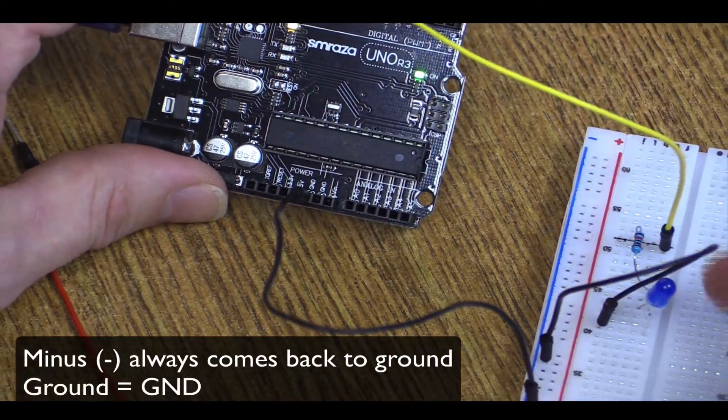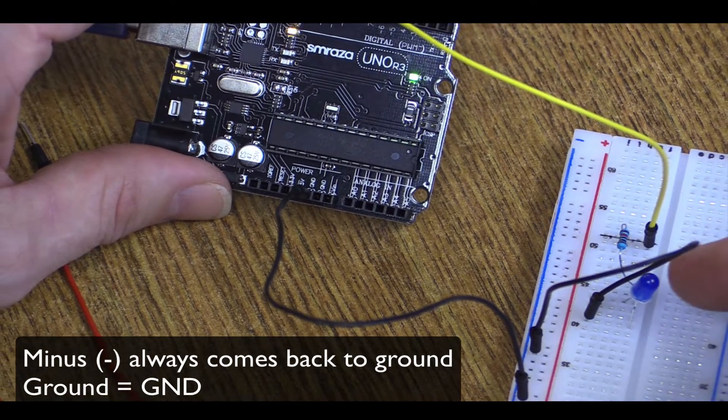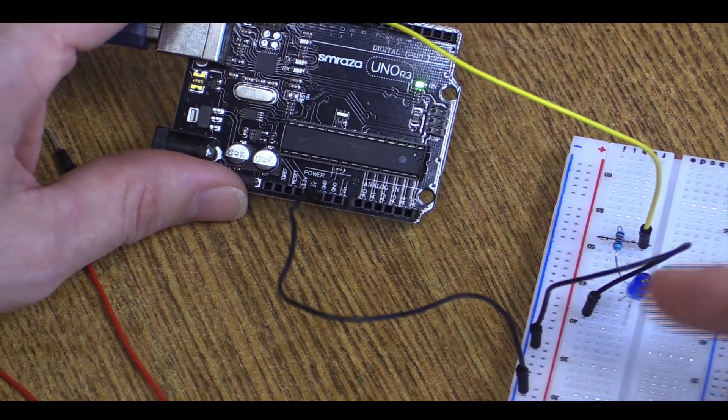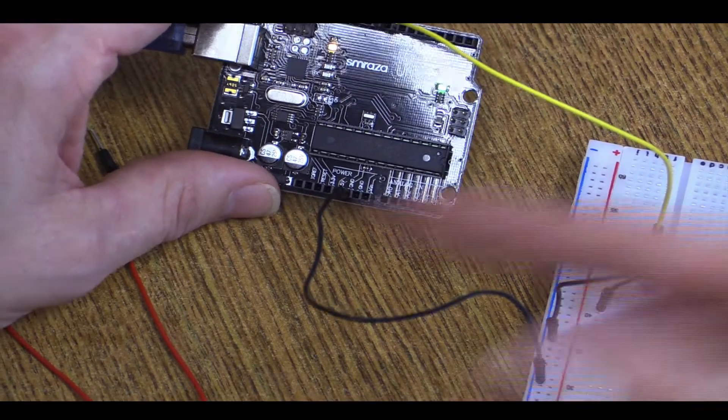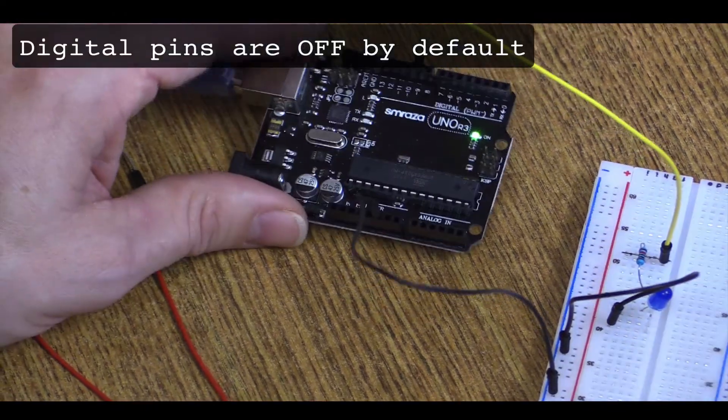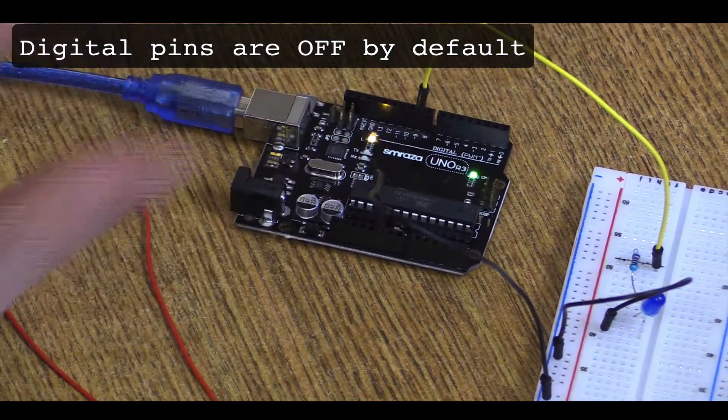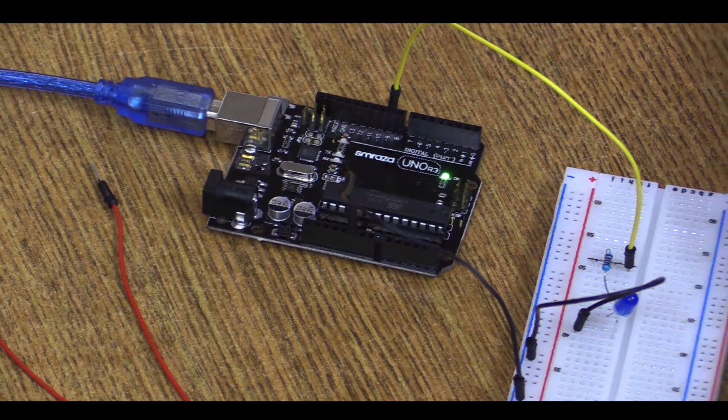Power comes in here, goes through our resistor, to the plus of the light, comes out the minus of the light, goes over to ground, comes back over. But there's no light because we have not told it to turn on. We have to tell the code what we want. So let's move over to our code.